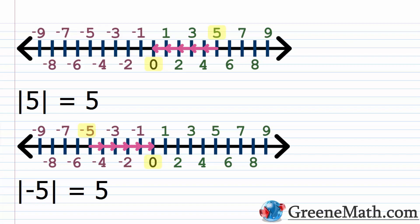We can see that very clearly with these two examples. Something like the absolute value of positive five is just equal to five. If I look at my sample number line, I have zero highlighted and five highlighted. Basically, five is five units away from zero on the number line. This is true whenever you take the absolute value of any positive number — it could be a million, it could be a trillion — it's always going to be that number of units away from zero on the number line.